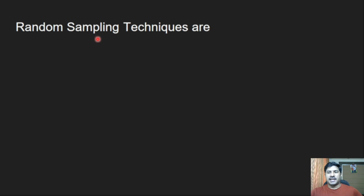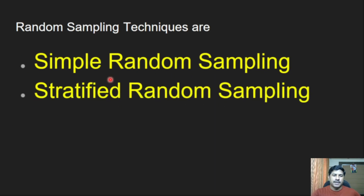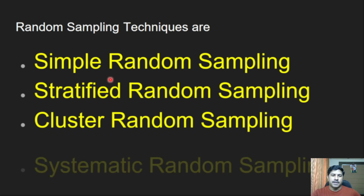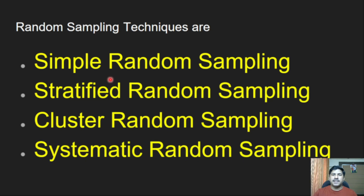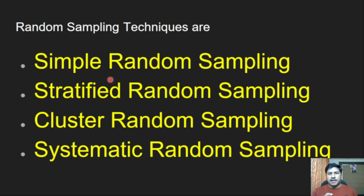Random sampling techniques are four. First is simple random sampling. Second is stratified random sampling. Third is cluster random sampling. Fourth is systematic random sampling. Simple random sampling means from a group of samples we pick randomly. Stratified random sampling means we divide the total group according to specific categories — boys in one group, girls in another — then take two or three random samples from each group.